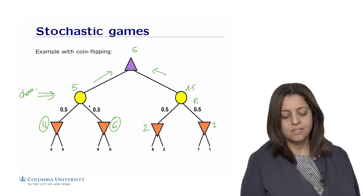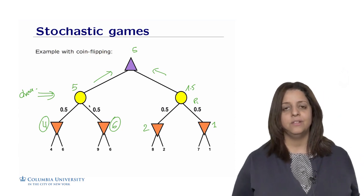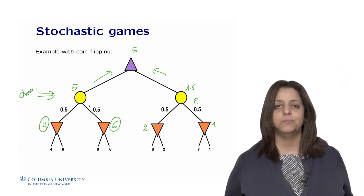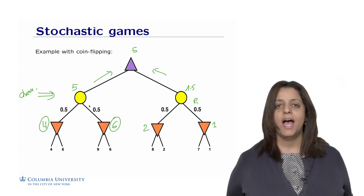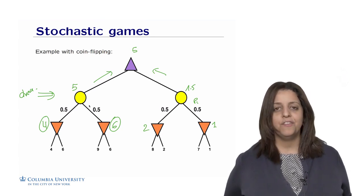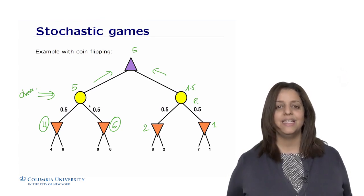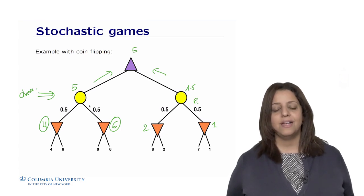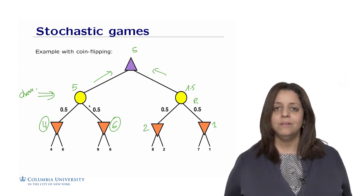This is a simple example with coin flipping. You could imagine with rolling a die, we have different probabilities depending on the different outcomes we get. This gives you a flavor of what stochastic games look like and how we change the minimax algorithm to handle that randomness in the search.